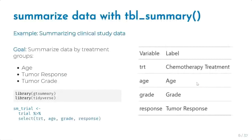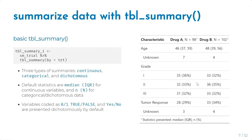tbl_summary is our primary function that summarizes datasets. The example dataset we'll use is called 'trial,' but we're making a small version called 'sm_trial' with only four columns, each labeled using the label package. In the most basic tbl_summary call, we pass the dataset sm_trial and use the argument 'by = TRT,' which creates a table one separated by treatment group.